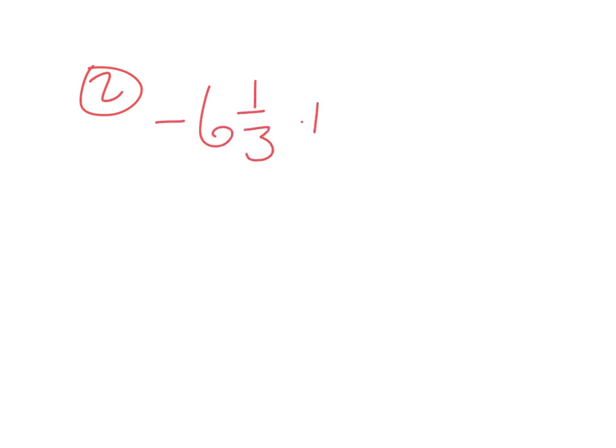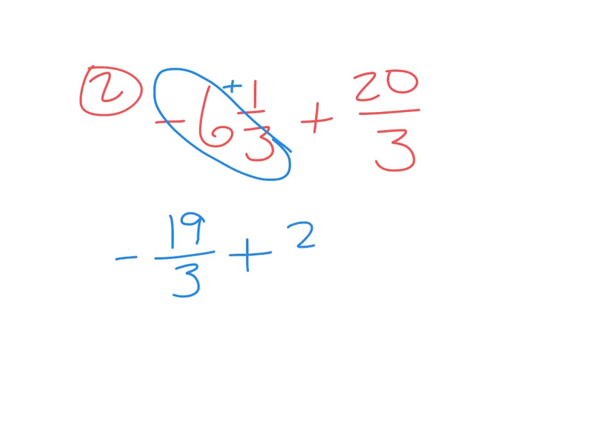Negative 6 and 1/3 plus 20/3. Do these have the same denominator? Yes. Yes, but we still need to do something. We need to make it improper. So we're going to multiply 6 times 3 and then add 1. 18, 19. Very good. So I have negative 19/3 plus 20/3. Now that makes it very simple, right? What's negative 19 plus 20? It's negative 1. I mean 1. Yeah, because the 20 is positive and the 19 is negative.